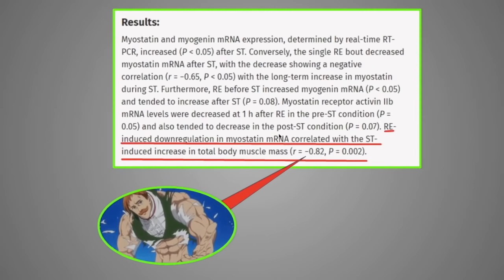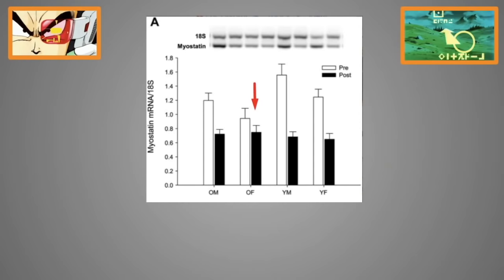Another study shows the same thing. The correlation with the amount of gains you put on after training and your ability to lower myostatin is negative 0.82, which is massive. Myostatin is also the reason why old women put on a lot less muscle than young men or old men after training. Mainly because they have a hard time lowering myostatin, even when they train.